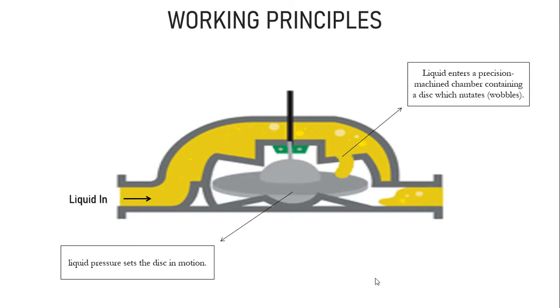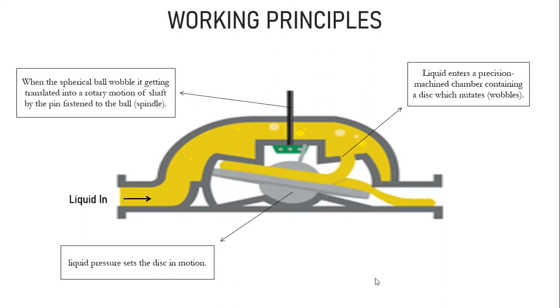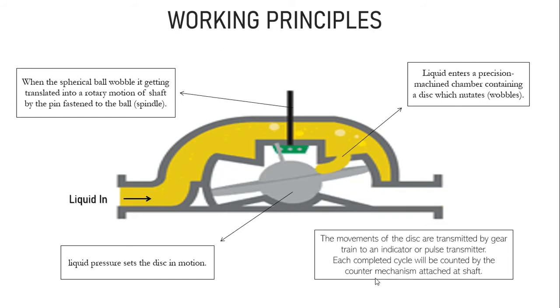Liquid pressure sets the disc in motion to make a complete cycle. The spherical ball wobble is translated into rotary motion of a shaft by a pin fastened to the ball. The movement of the disc is transmitted by gear train to an indicator or pulse transmitter. Each completed cycle is counted by the counter mechanism attached to the shaft, and lastly, the liquid exits the device at the right side.